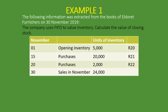From the 1st of November to the 30th of November, we had some movements in inventory. We had opening inventory of 5,000 units at 20 Rand. We had on the 15th purchases of 20,000 units at 21 Rand. On the 20th, purchases of 2,000 units at 22 Rand. And we're told on the 30th that sales in November were 24,000 units. We only care about how much we bought the inventory for — not the selling price.